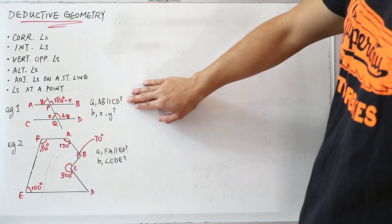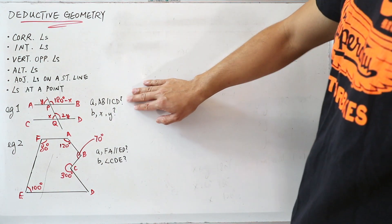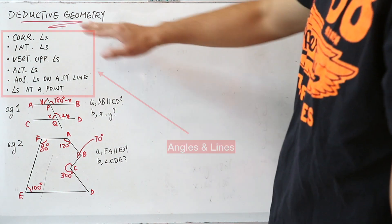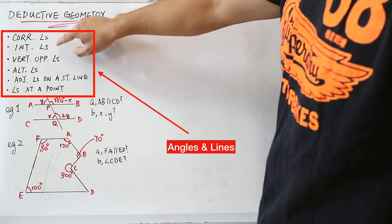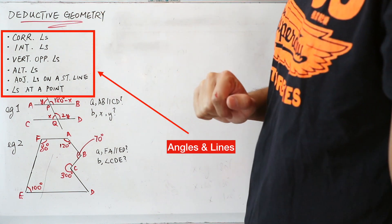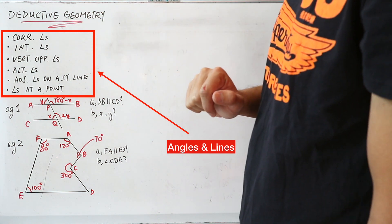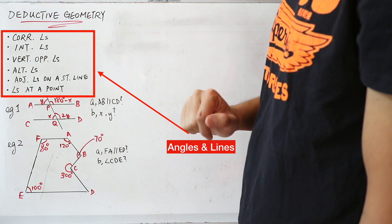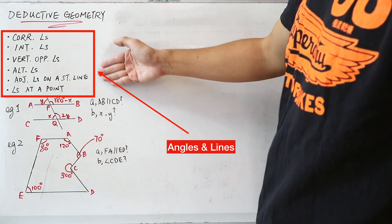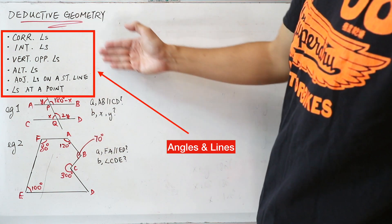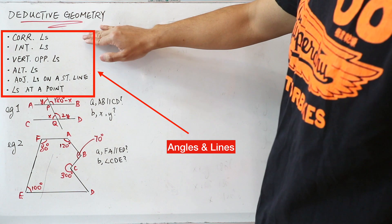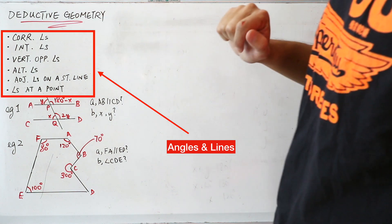Before I start on part A, I need to tell you a few more things. On this whiteboard, I've written six things related to angles and lines. Note that this is not the whole list — there are actually many more, but I've written the more important ones here.